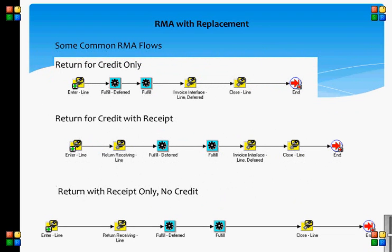Some of the common RMA workflows are: return for credit only, return for credit with receipt, and return with receipt only and no credit.